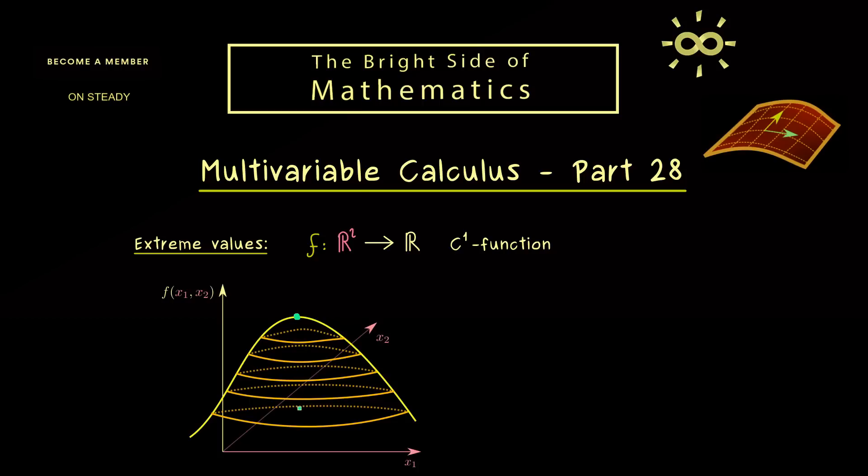For this maximum here, we have a corresponding point in R², and let's call this one x̃. Hence, we would say f has a local extremum at x̃. Here, please don't forget, if we say local extremum, it can be either a local maximum or a local minimum.